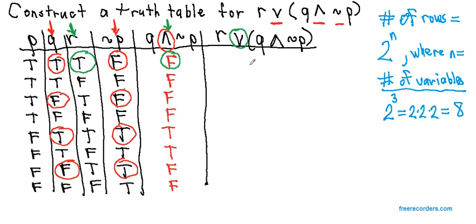So here we have true ORed with false, that's true. Row two, false ORed with false, that's the only time an OR statement is false. True ORed with false is true. False ORed with false is the only time an OR statement is false.